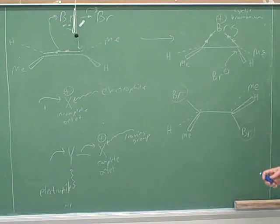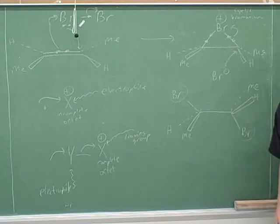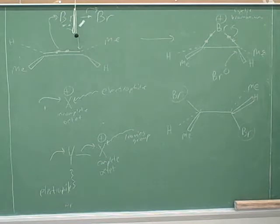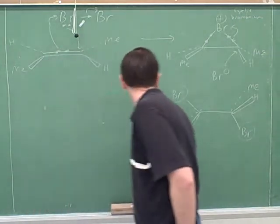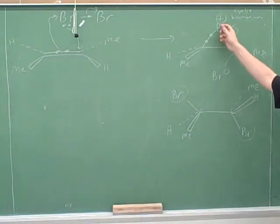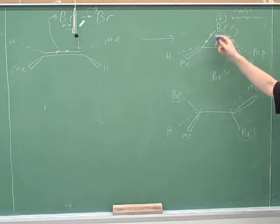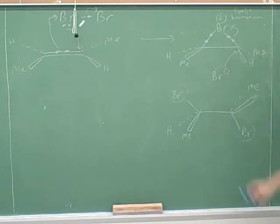There isn't really any regiochemistry because it doesn't matter which atom the bromines end up on — they're both the same atom. So there isn't really any regiochemistry here, only stereochemistry. We also reviewed the idea that the bromine does not just attack the Br⁺, because that already has a complete octet. A positive charge on something with a complete octet makes the adjacent atom into the electrophile.